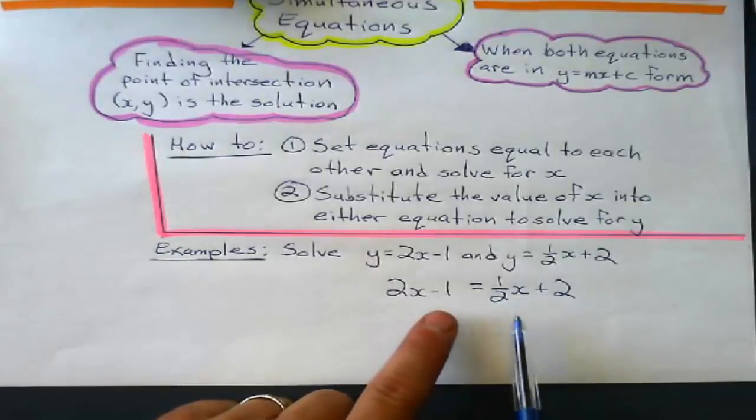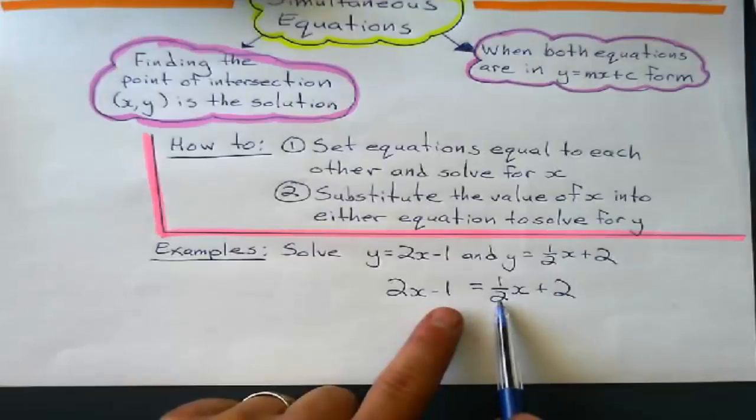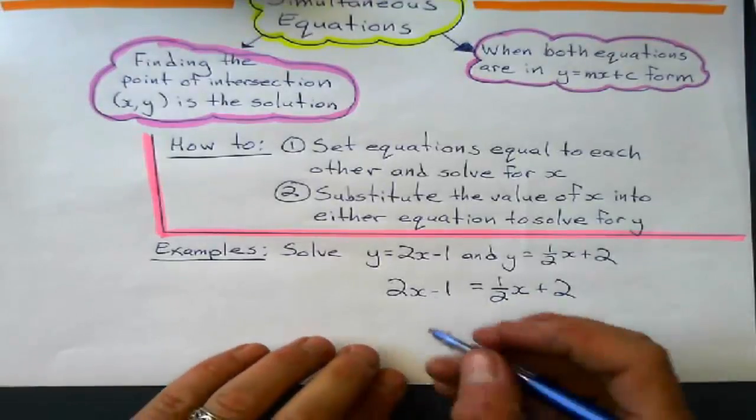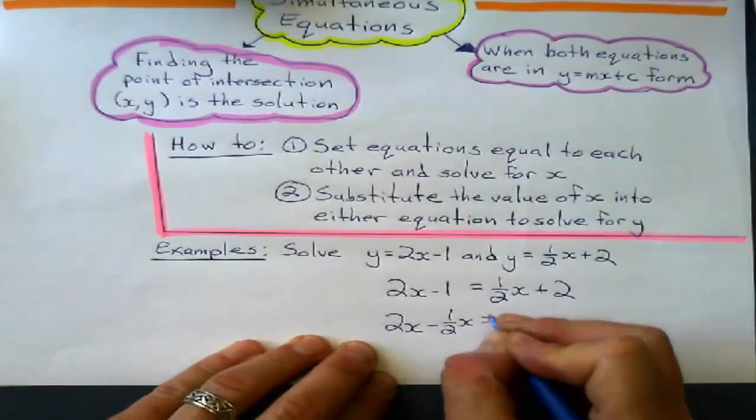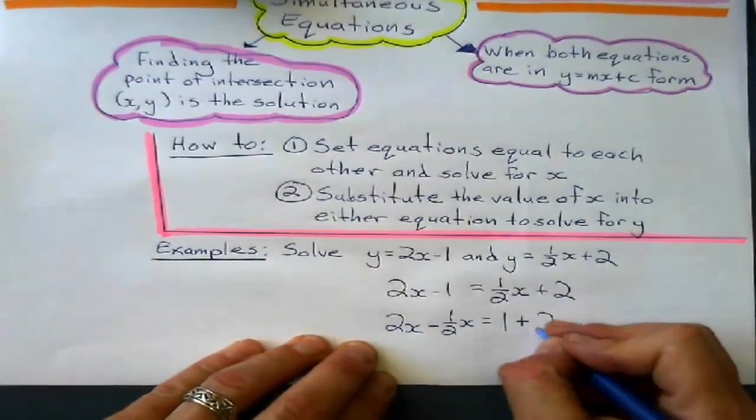Now, I'm going to do that thing I told you about earlier where I'm going to swap these two terms to the opposite sides of the equation and change their sign. So, this minus 1 will go to the other side and become plus 1 and that 1 half x will become a negative 1 half x. Like this equals, that's 1 plus 2.